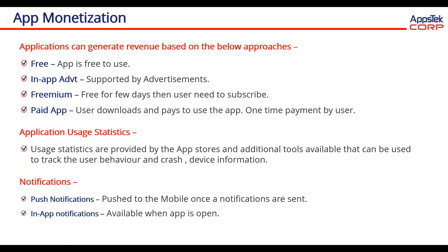App monetization — how do you generate revenue from the app? Applications can be classified into four monetization approaches. One is free: many enterprises offer certain applications to their users, like banks, free to use with a login provided to the user. Another is in-app advertisement: some applications can be given free to users with the support of advertisements, or users can pay separately for an ad-free experience. Premium: it is free for a few days and then you need to subscribe by paying through in-app purchases or payments through the play stores.